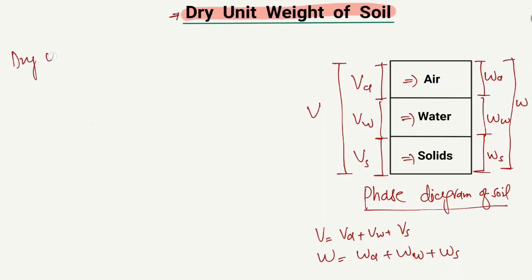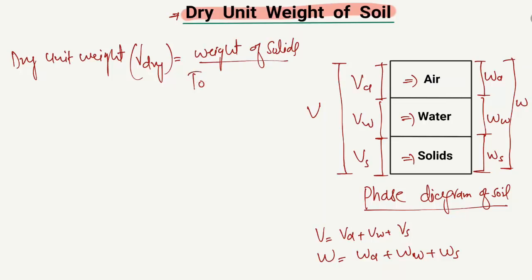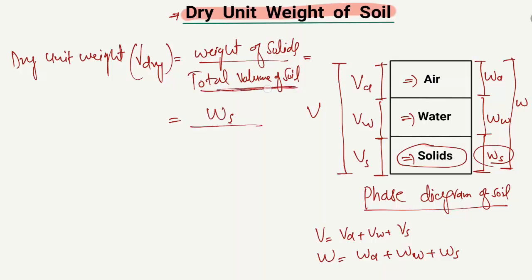The dry unit weight is represented by gamma dry (γ_dry). By looking at the phase diagram, it is equal to the weight of solids (WS) divided by the total volume of soil (V). The total volume of soil contains the volume of air, volume of water, and volume of solids. So gamma dry equals WS divided by V. This is known as the dry unit weight of the soil sample.